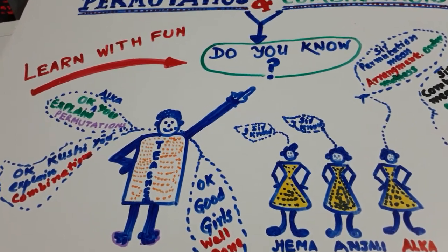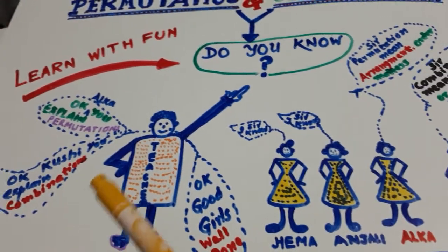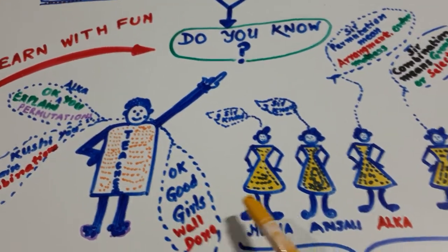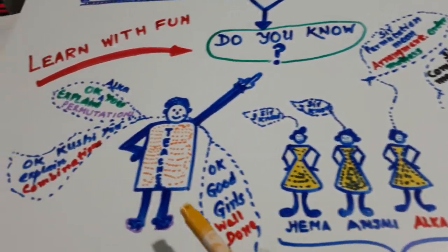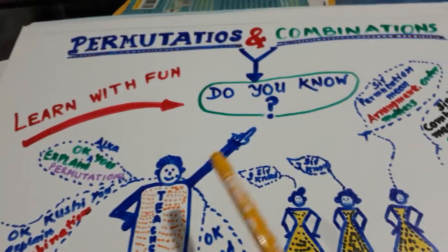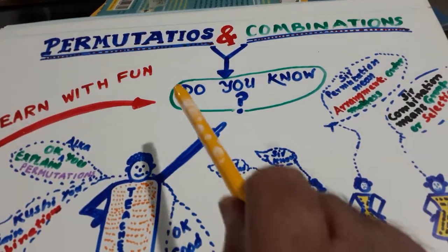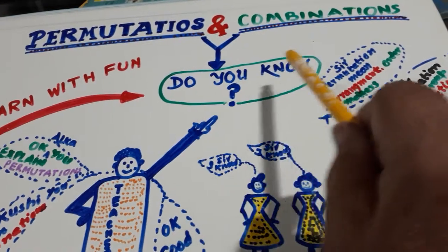Here is the teacher and these are four students of Eureka Academy. Teacher is asking, do you know permutation and combinations?